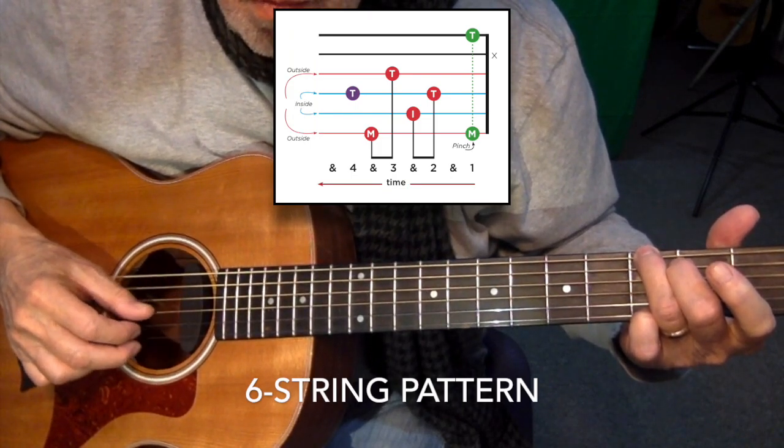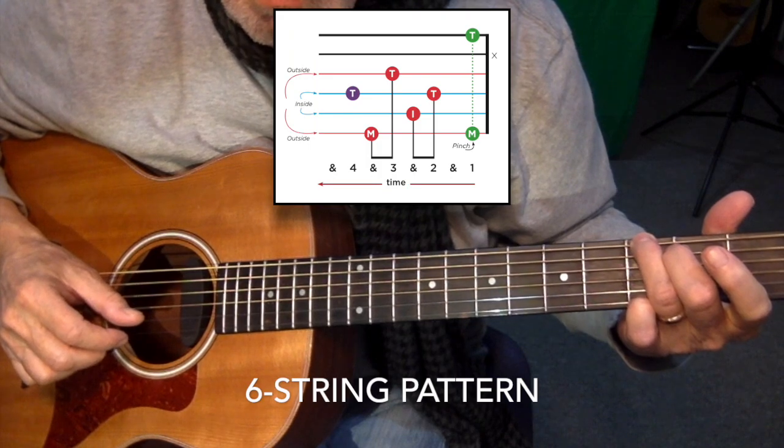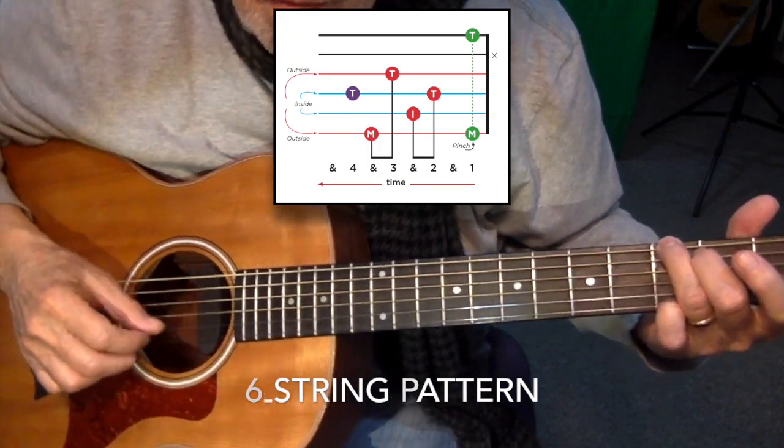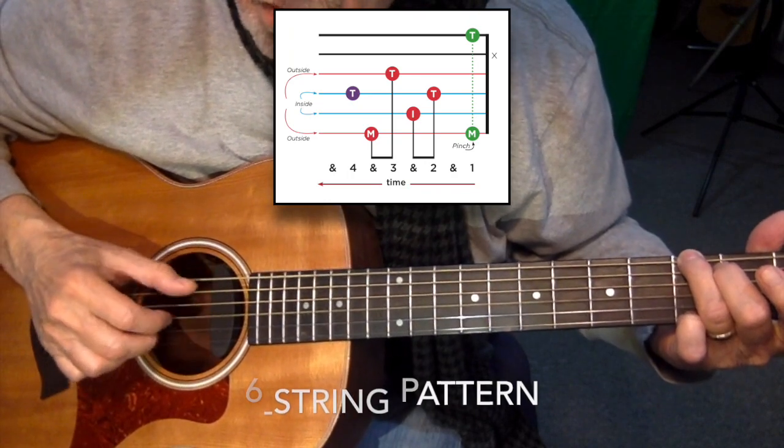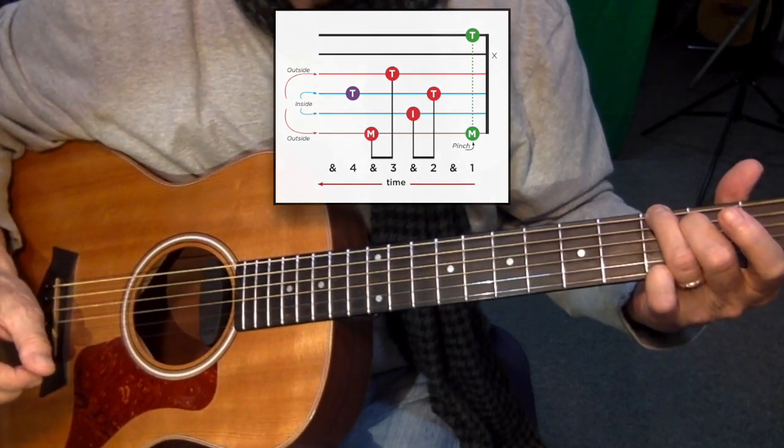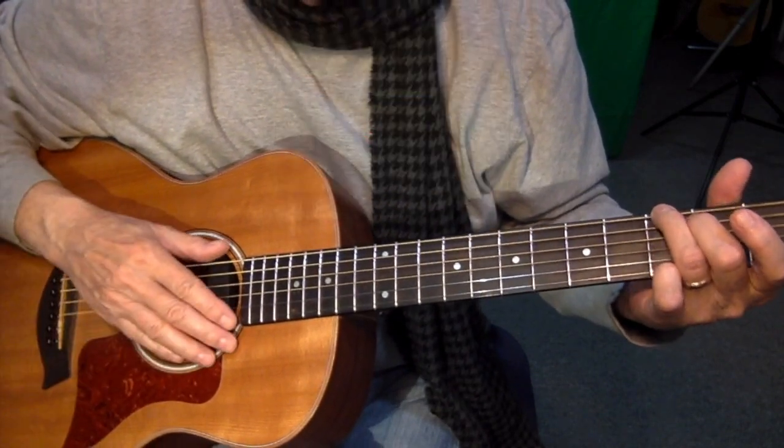So pinch in green, followed by the rolling of the four high strings, thumb index on the inside pair, thumb middle on the outside pair, and then the measure is completed with that thumb on the G string for every measure, whether it's a four, five, or six string pattern.